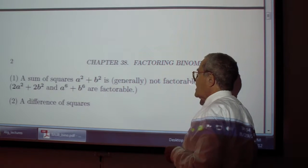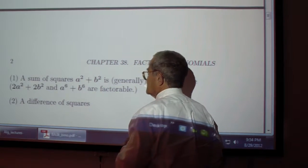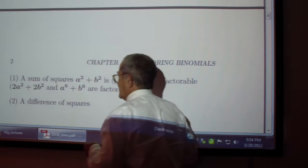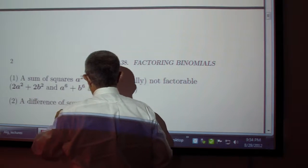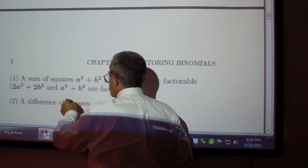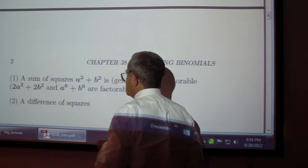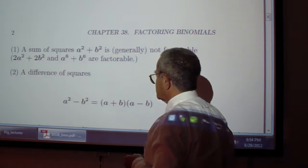A sum of squares, in general, cannot be factored, unless you factor out a greatest common factor. This one is an exception. I can factor a to the 6th plus b to the 6th.